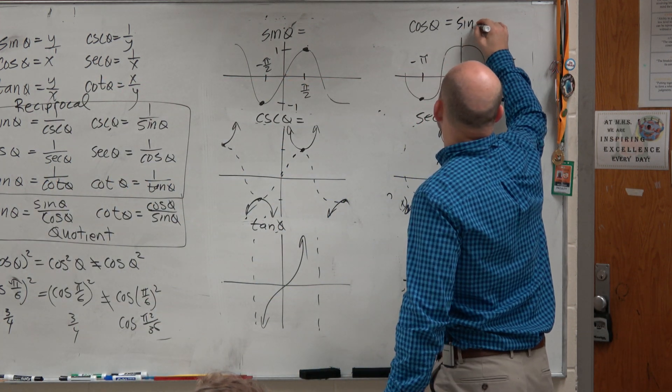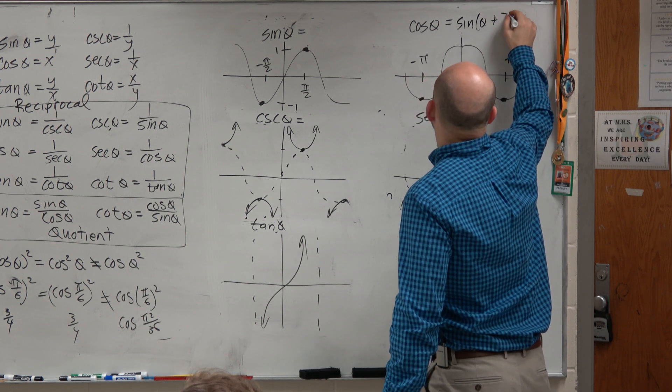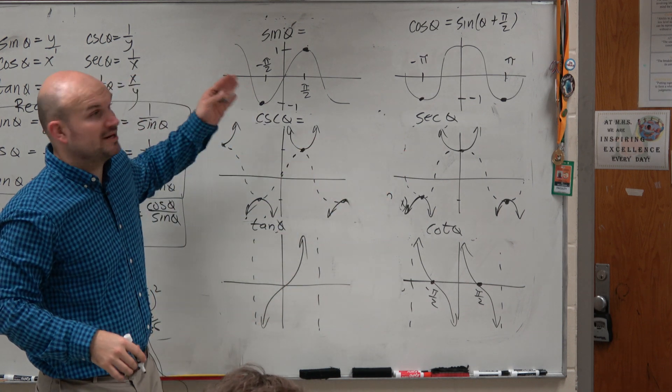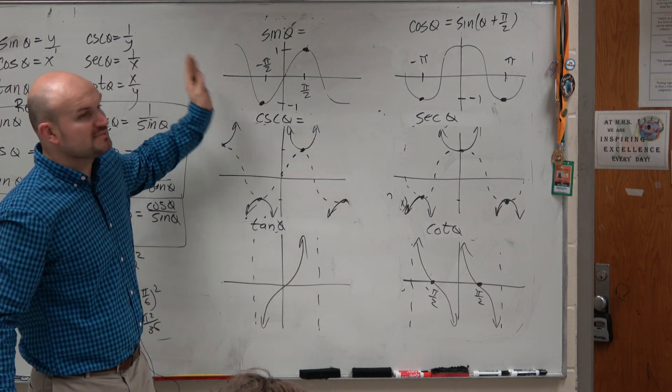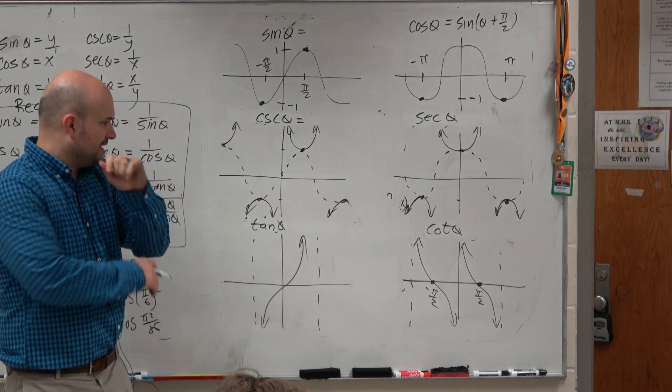Plus pi halves, OK. So that didn't work though, right? Well, it worked for cosine to sine, but it didn't work from sine to cosine, but it didn't work the other way going back, right? So let's go and look over here.